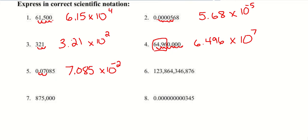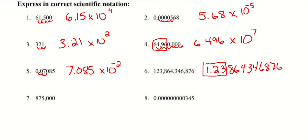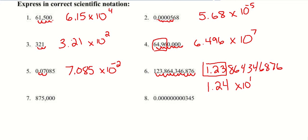Number 6 — now we could write this as the full decimal, but that kind of defeats the purpose of scientific notation. So what a lot of times they'll do is take the first three non-zero numbers and round. So with only three significant figures, the next number is an 8, so we'll put 1.24. We count 1 through 11 decimal places moved, so it's 1.24 times 10 to the 11th. For the next one, the decimal point is currently after the 1 — we want to move 1, 2, 3, 4, 5 spots — so 8.75 times 10 to the 5. And the last one, we move 10 spots with the original number less than 1, giving us 3.45 times 10 to the negative 10.